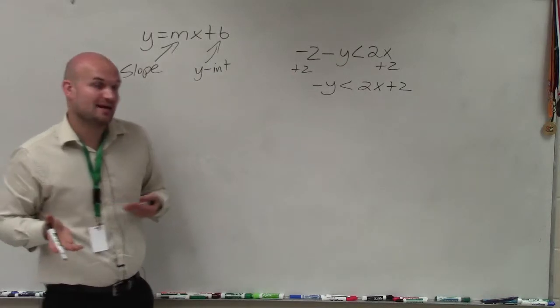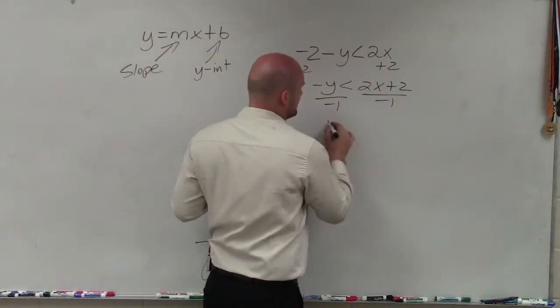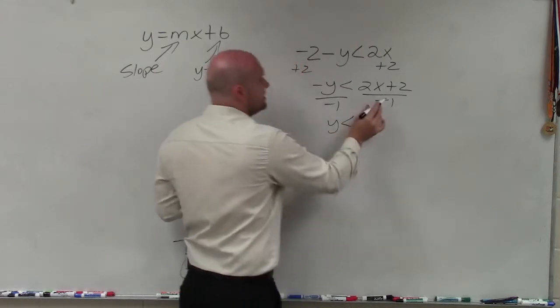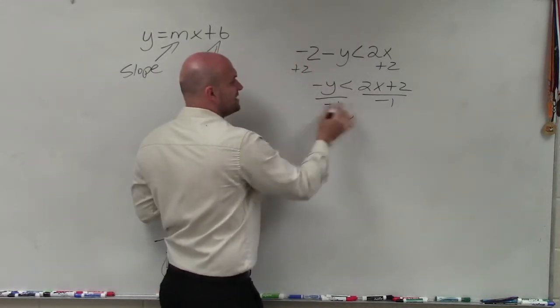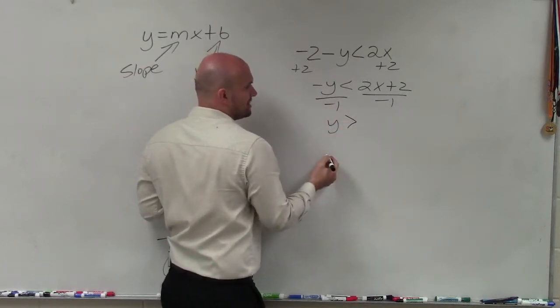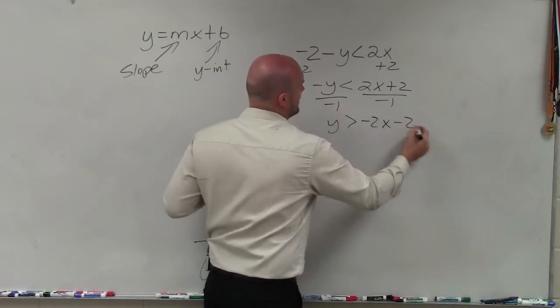Now I have my y being multiplied by a negative 1. So to undo multiplying by a negative 1, I'm going to divide by a negative 1, where therefore I have y is less than. Now this negative 1 divides into both of them. And remember, whenever I divide a negative 1 on both sides, I have to flip my sign. So therefore, now I have y is greater than a negative 2x minus 2.